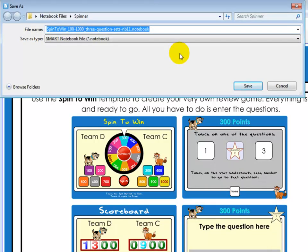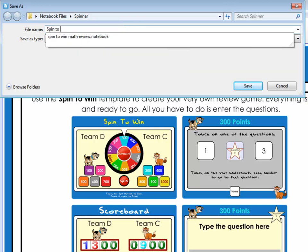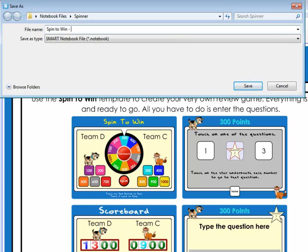And I'm just going to type in the name for my Spin to Win review game. So I'm going to enter Spin to Win World War II Review and click Save.